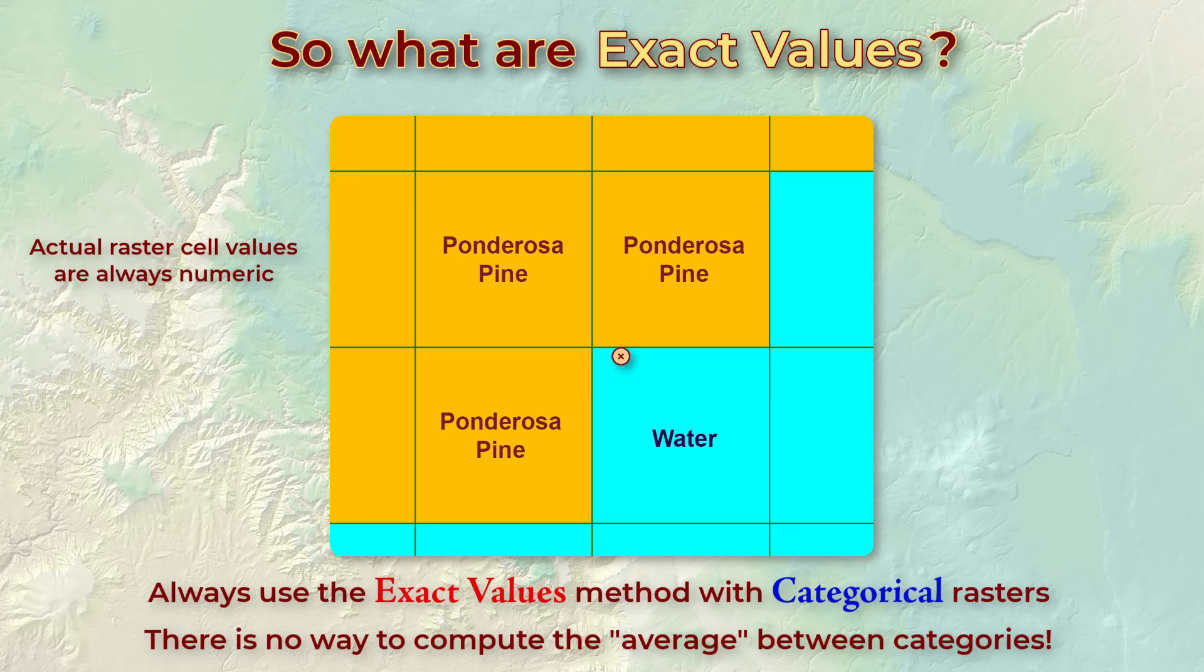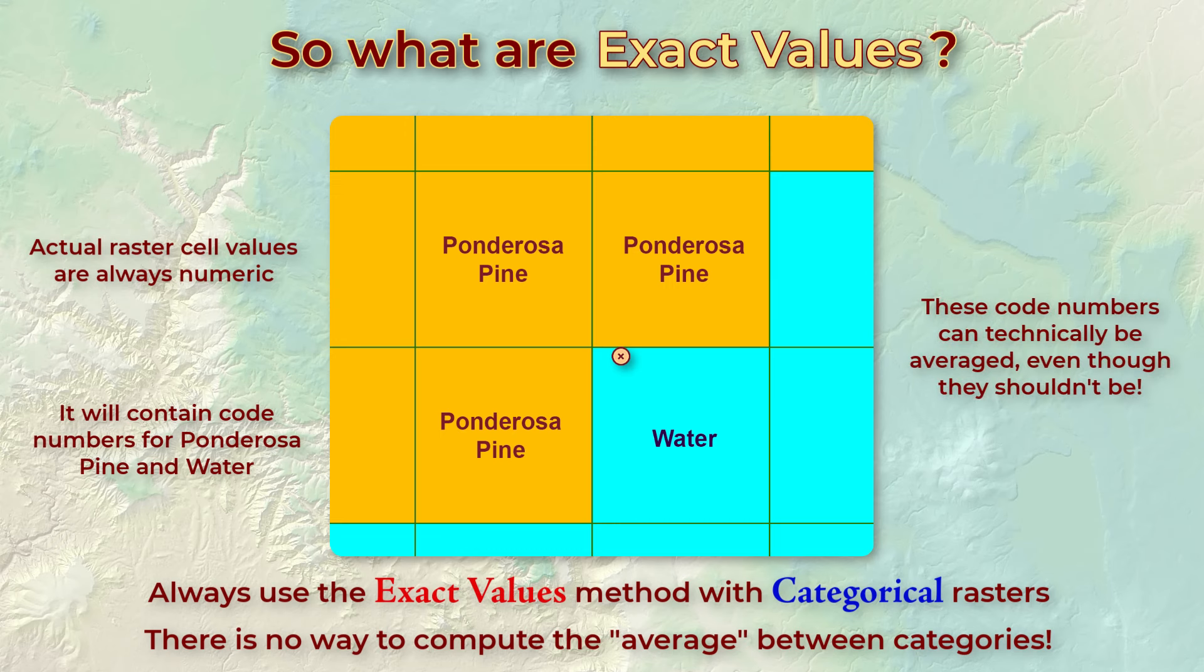Now remember that even in cases like this where the categories are land cover types, the cells actually hold numbers. These numbers are just code numbers representing ponderosa pine and water. But because they're numbers, they can be averaged, and the tool is willing to average them if you tell it to.